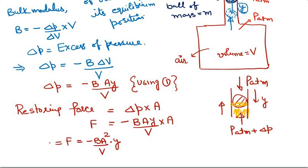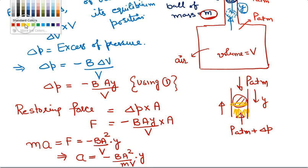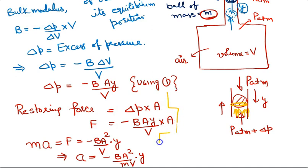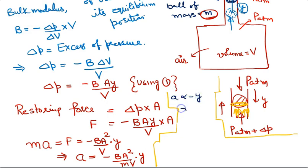This force is acting on the ball and mass of the ball was taken as M. So we may write this force as mass into acceleration. Therefore acceleration of the ball due to excessive pressure inside chamber will be given by minus B A square by MV into Y. Clearly you can see that this acceleration is directly proportional to minus of Y, means this acceleration A is proportional to minus of Y.